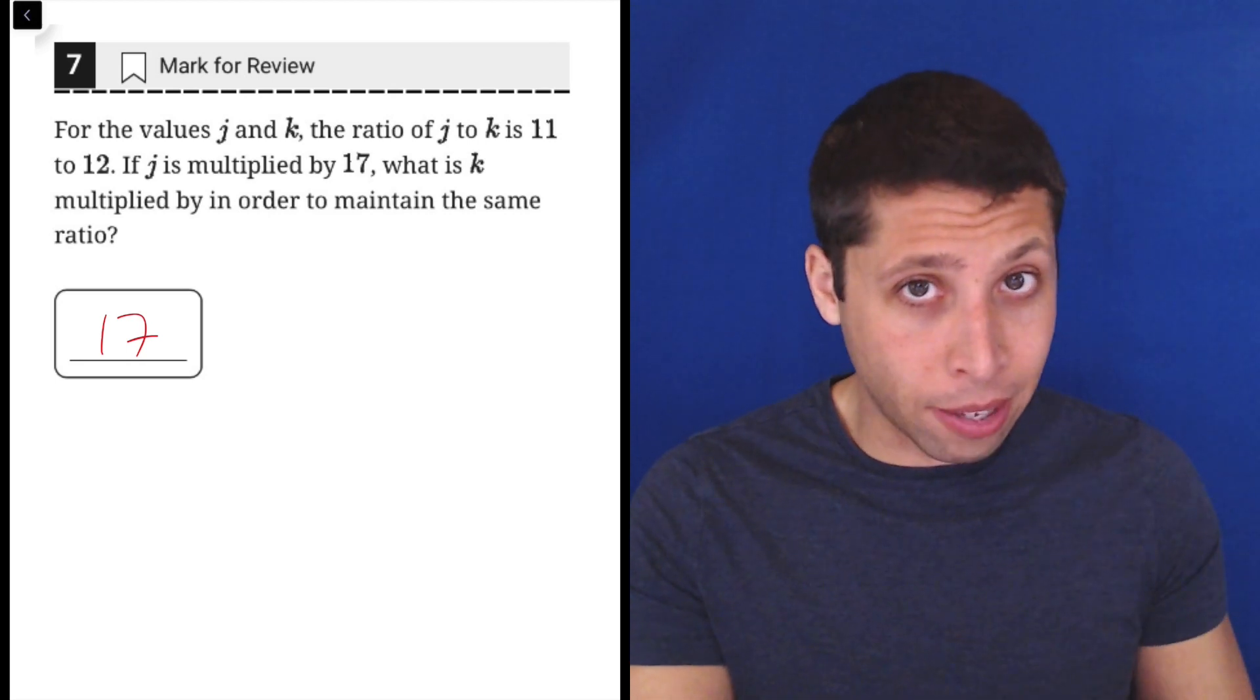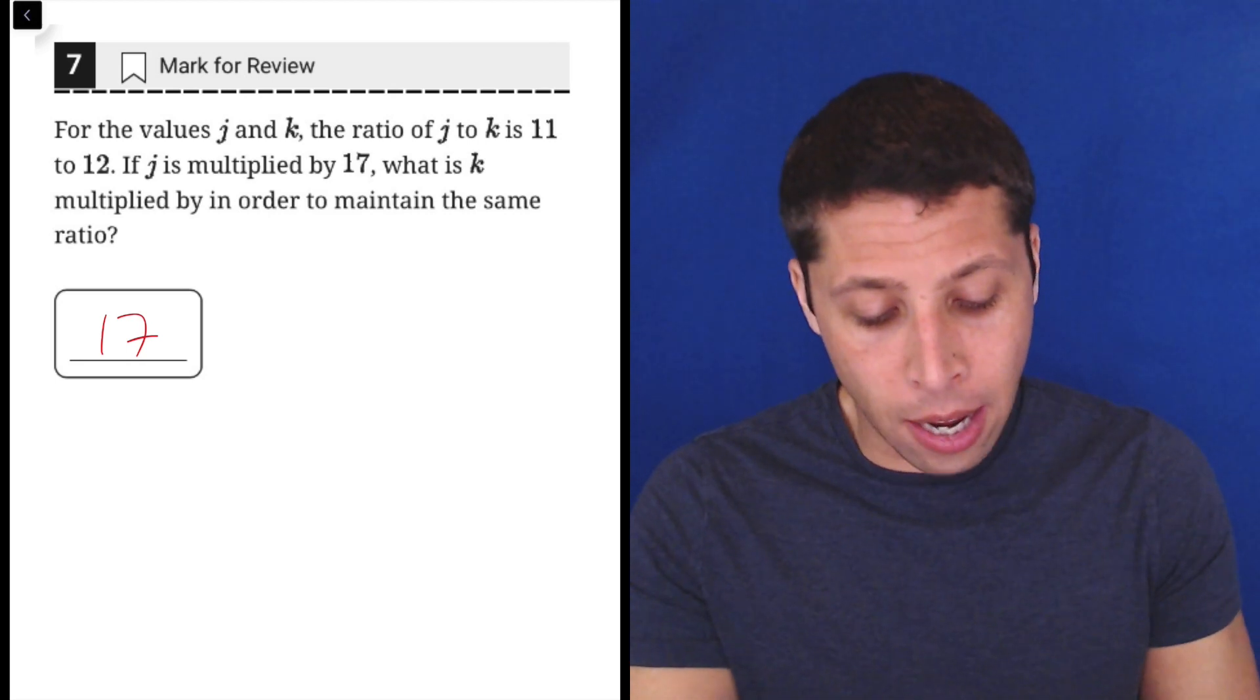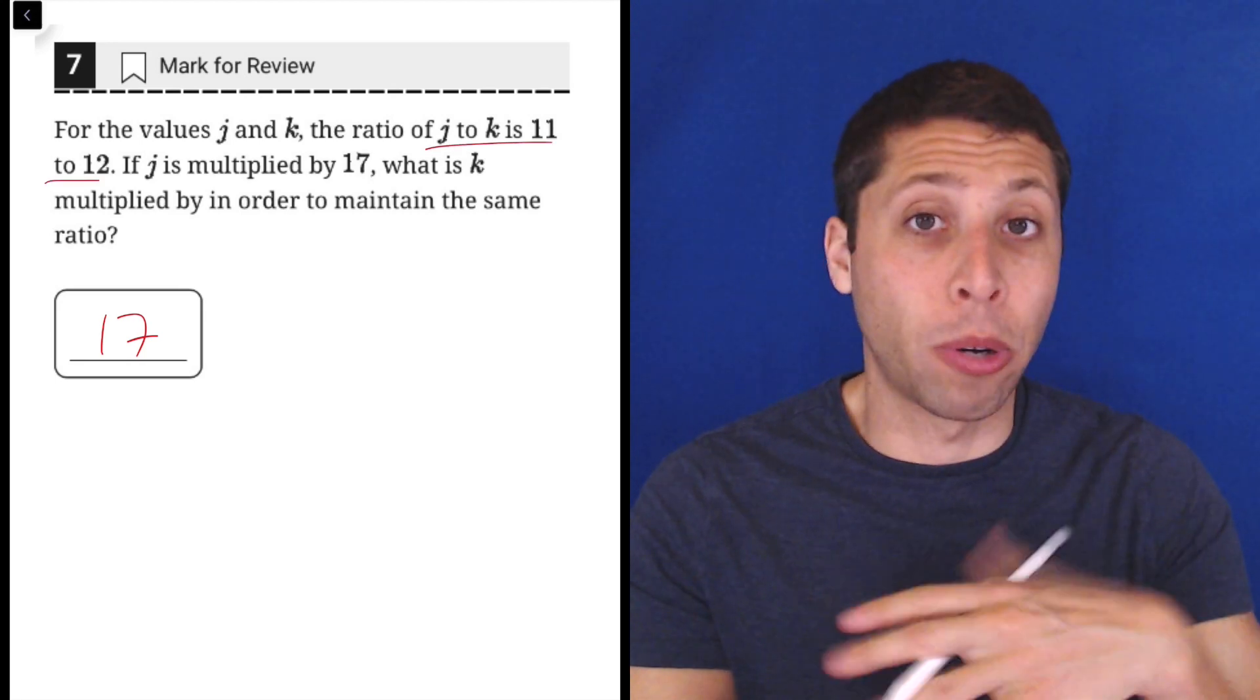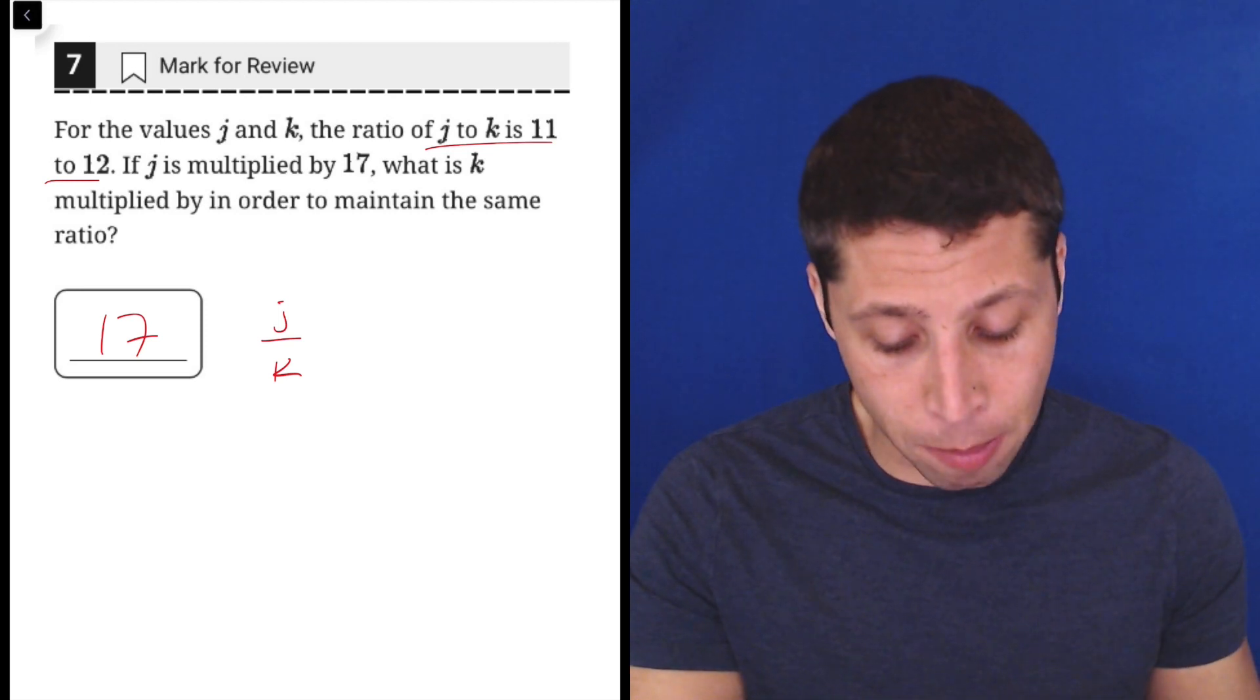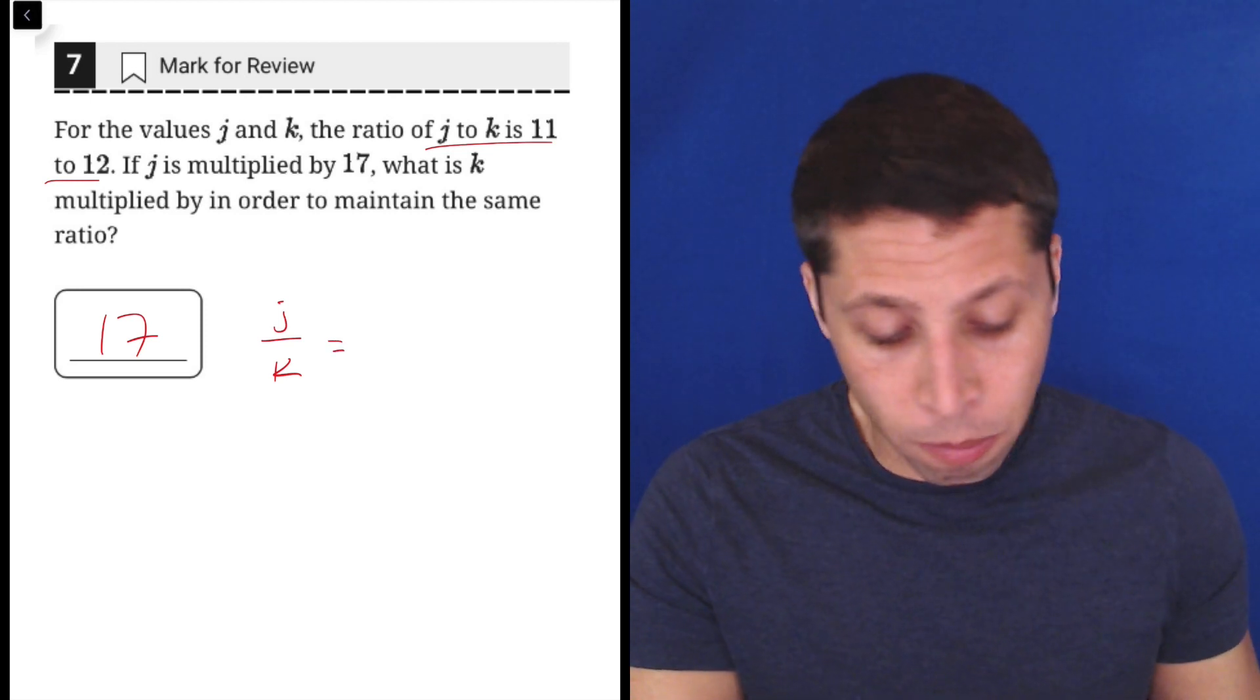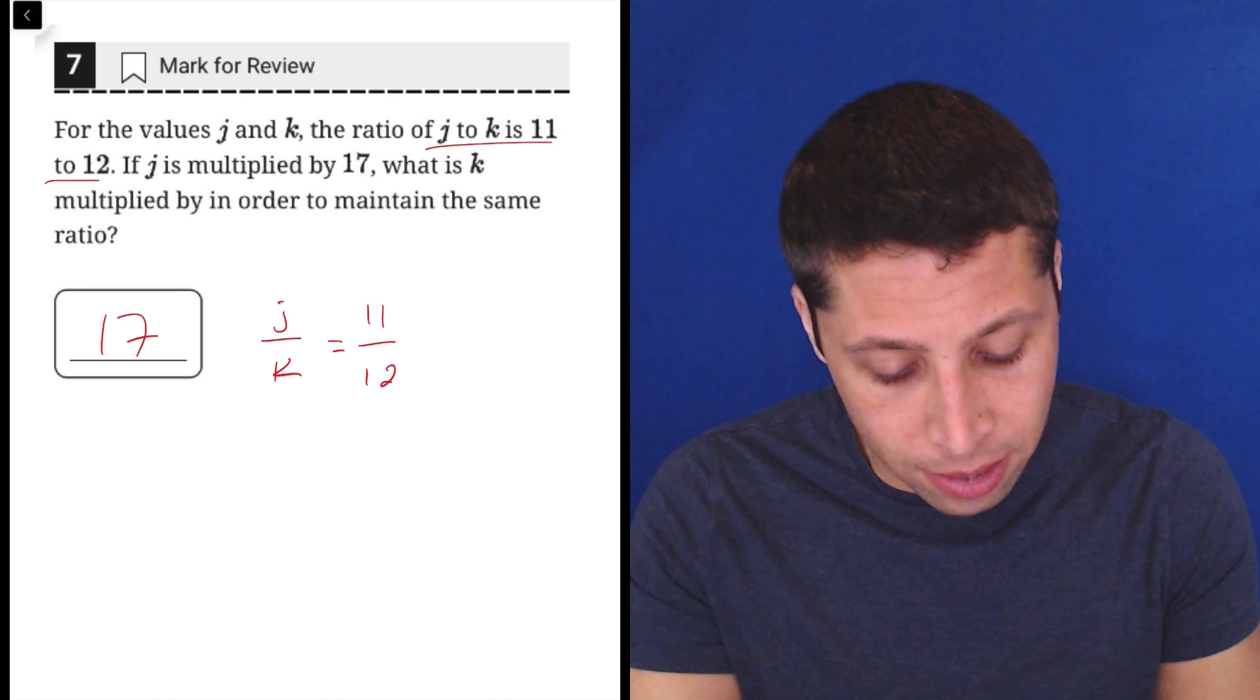So to show you what that really means here, let's create, let's use this first bit here to actually create a ratio to start. So J to K, we can write that as a fraction, J on the top, K on the bottom, is equal to 11 to 12. So that's basically what it means.